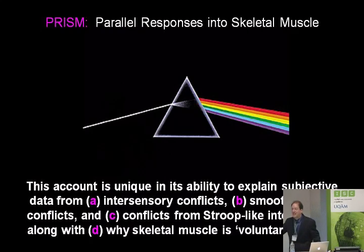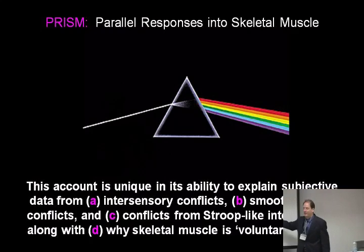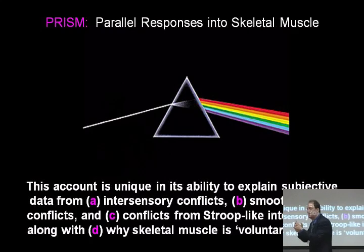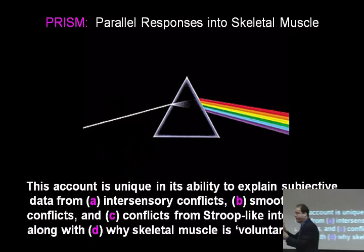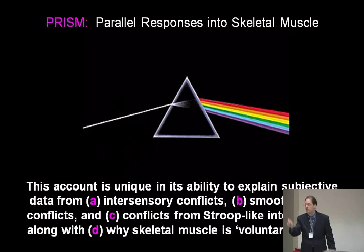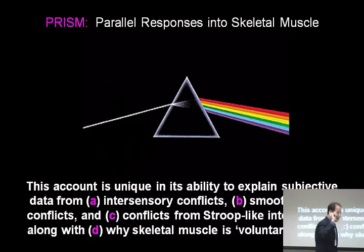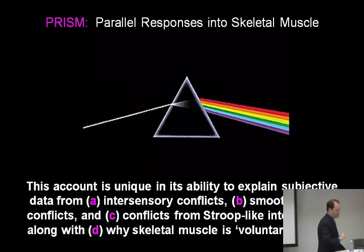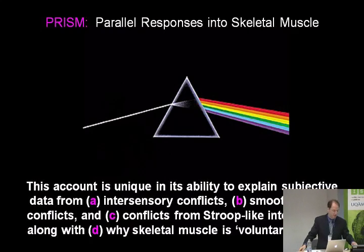The difference is that in the conscious conflicts, you have different systems that are trying to guide one specific effector in the body of many effectors — the skeletal muscle effector, or the striate muscle effector. When the conflict involves skeletal muscle, you are conscious of something going on. This is captured by the term John Bargh came up with: PRISM — parallel responses into skeletal muscle.